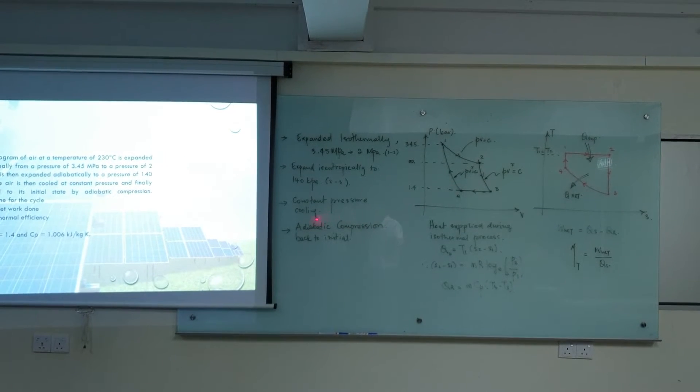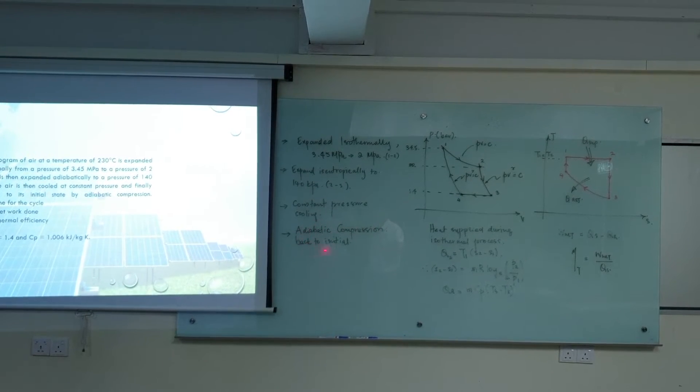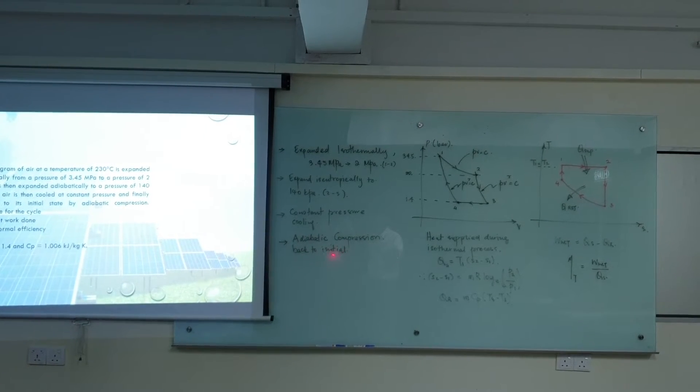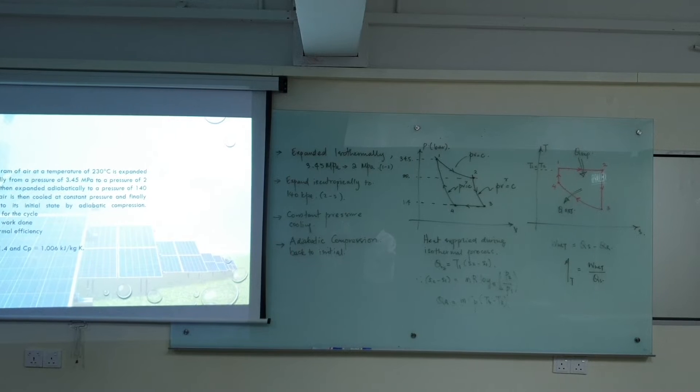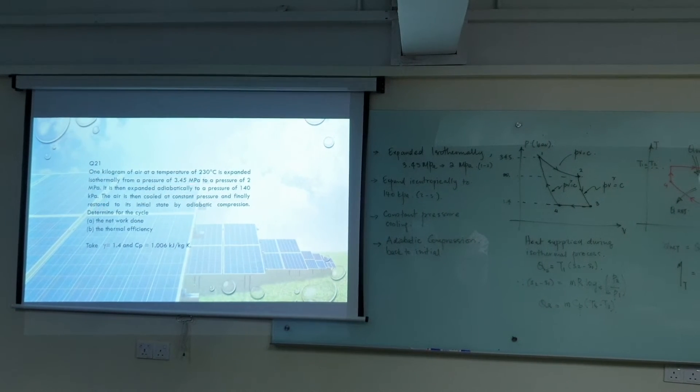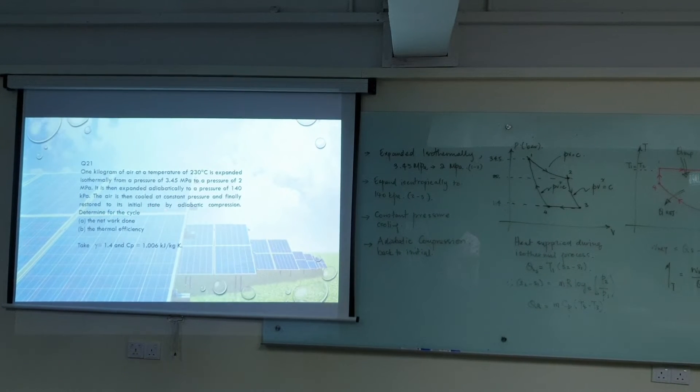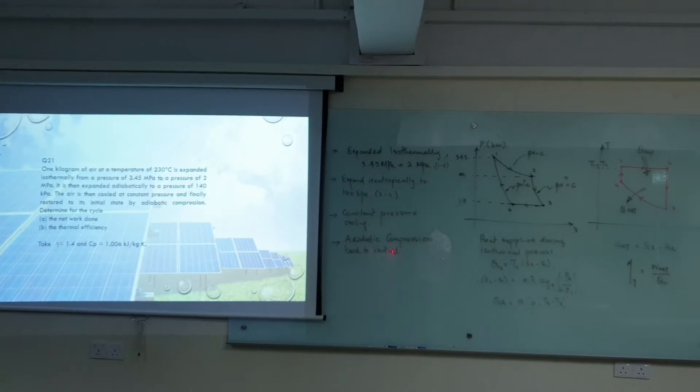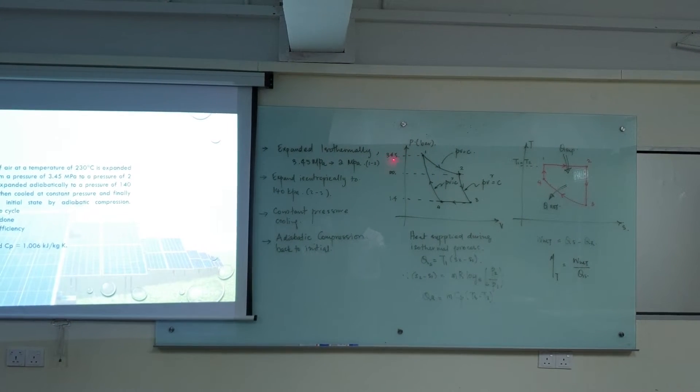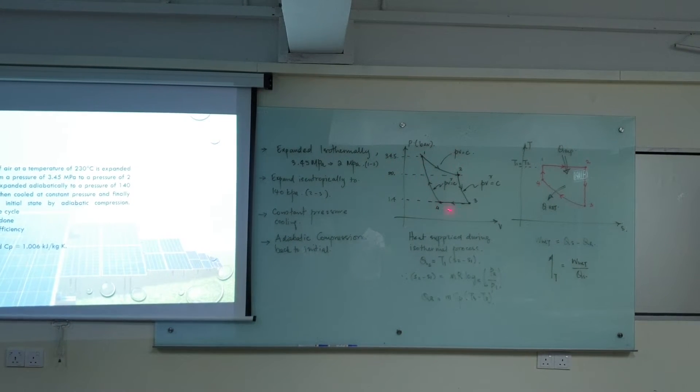Then lastly, the question says it compresses isentropically back to its initial point. That is what is stated—restore finally to its initial state point. So back to its initial state point to 0.1, that is 34.5 bar. So that is the PV diagram.